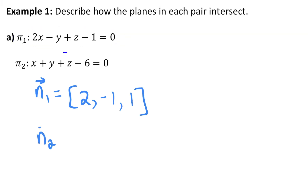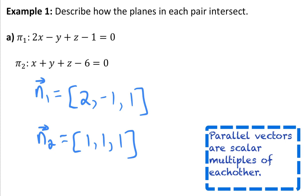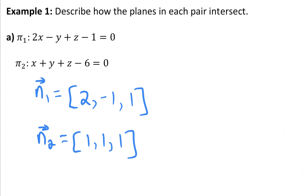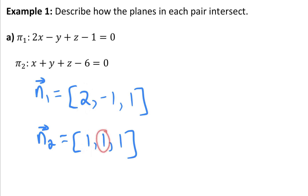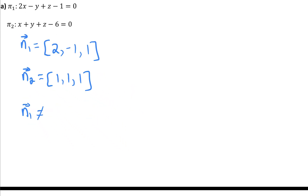If vectors are parallel, they would be scalar multiples of each other. Is there a number I can multiply all components of normal two by to make it equal to normal one? If I multiply the x component by two, I get two. But if I multiply the y component by two, I don't get negative one. Therefore, normal one is not a scalar multiple of normal two, so the normals are not parallel, which means the planes are not parallel — they intersect in a line.